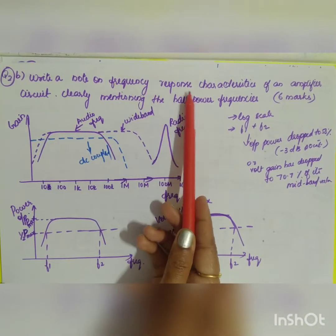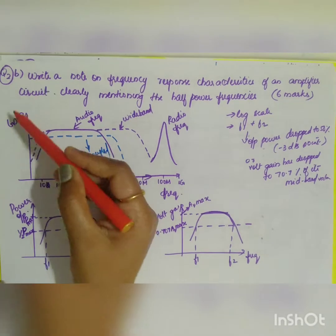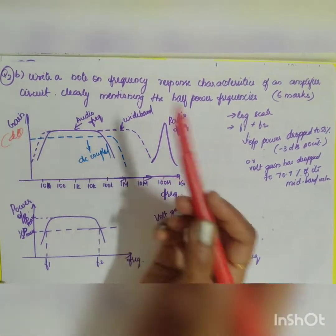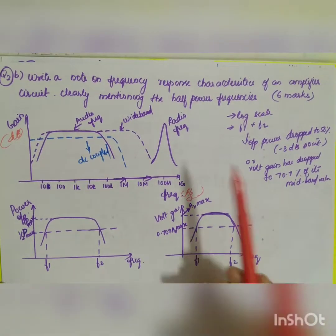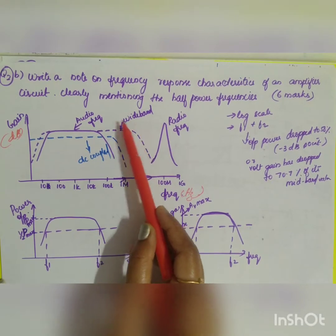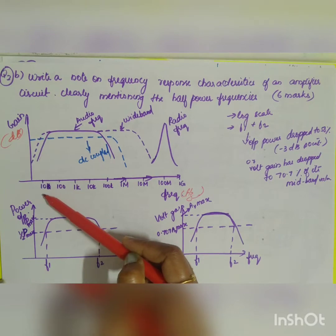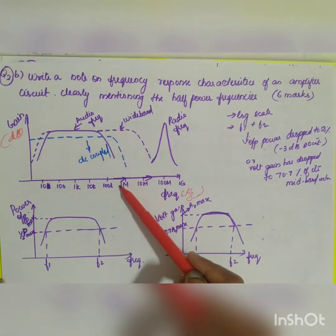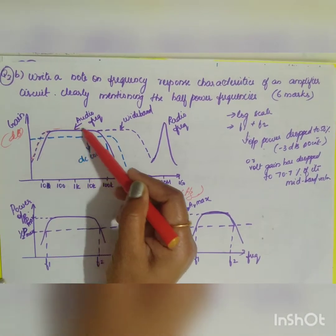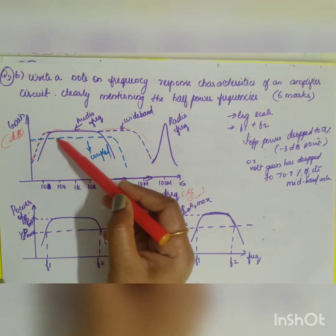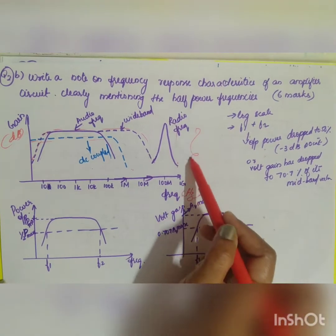You know that the frequency response of the amplifier is plotted between gain in dB and frequency in hertz, on a logarithmic scale. These are different examples of frequency response for different amplifiers: audio frequency ranging from 10kHz to 100kHz or 1 MHz, wide band amplifiers with a wider frequency range, DC coupled response, and radio frequency response.